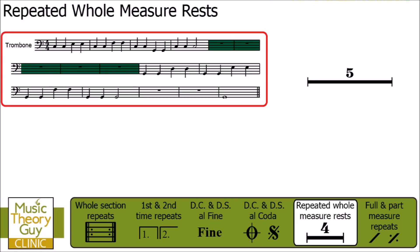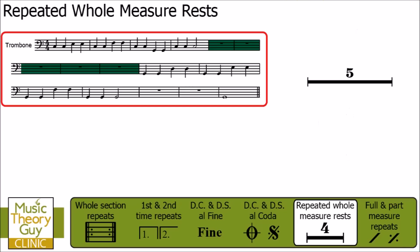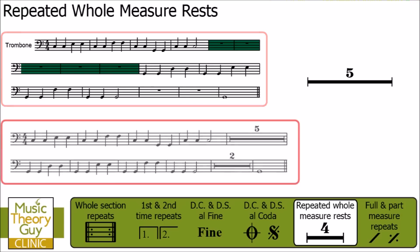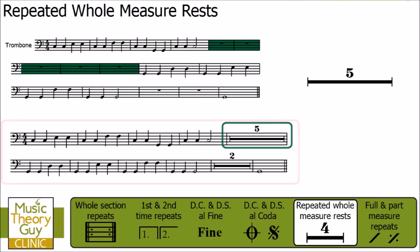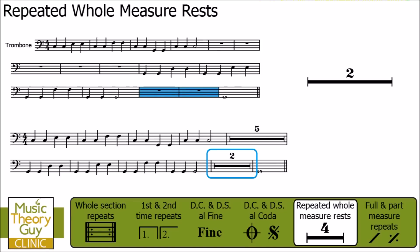Just before we go any further, be aware that the thick black line can be shorter. Here's an example with four, and here's an example with three. But sometimes it can just be a standard size — here's one with 32, which is exactly the same length as five. So the length of the thick black line makes no difference at all; what you're looking for is the number above it. We can rewrite that trombone piece of music and replace those five whole measure rests with this symbol, and at the bottom I've done the same for the two empty bars or measures as well.